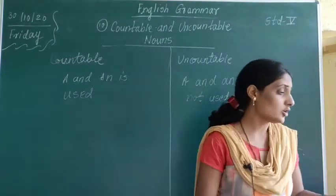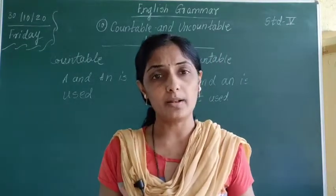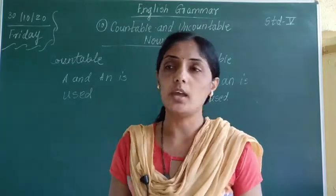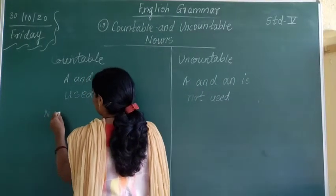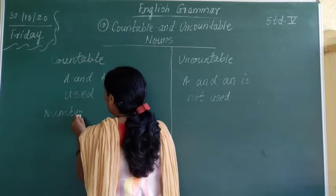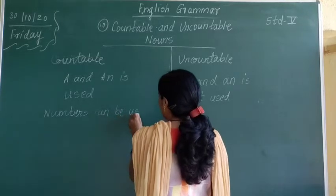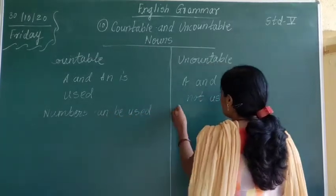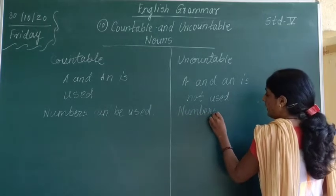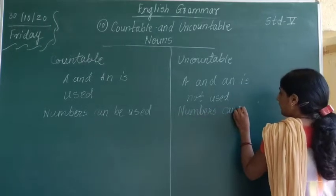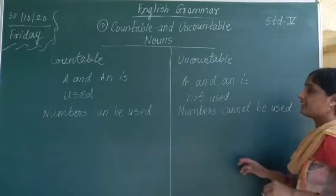The next point is that numbers can be used with countable nouns, and for uncountable nouns we don't use any numbers. So the second point is: numbers can be used with countable nouns, and numbers cannot be used with uncountable nouns.